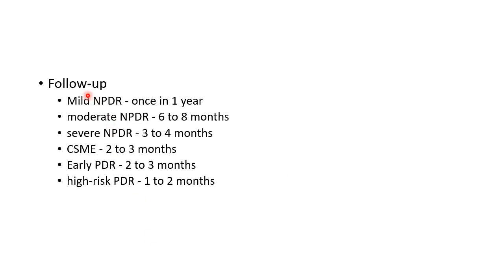Now let us see about the follow-up of cases of diabetic retinopathy. Mild NPDR can be followed once every year. Moderate NPDR should be followed once every six to eight months. Severe NPDR should be followed once every three to four months. Clinically significant macular edema should be followed once every two to three months. Early PDR should be followed once every two to three months. High-risk PDR should be followed once every one to two months.